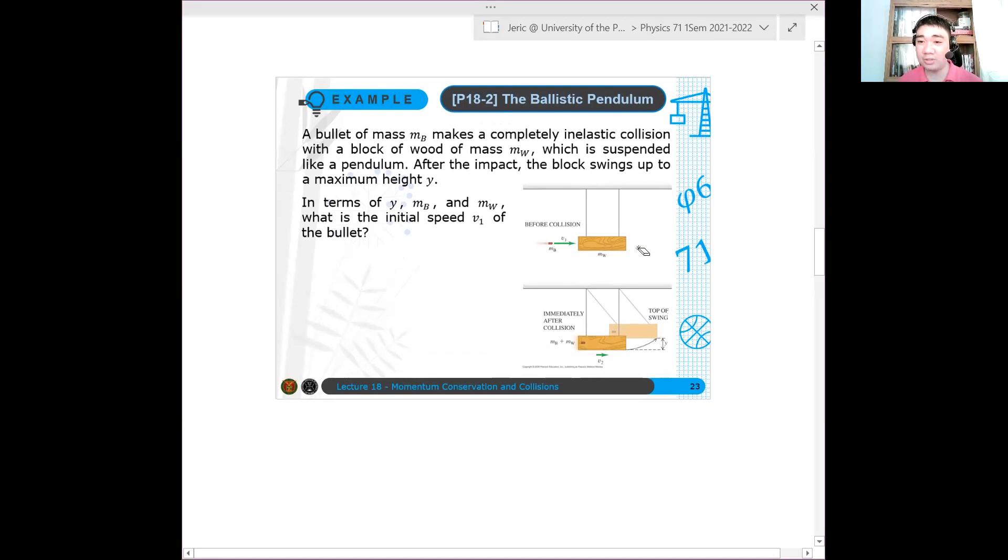So there are three situations that are happening. First, the bullet is moving with some velocity. So let's say that's the first state of the system. Our system is the bullet and the wood. So the bullet-wood system is here. The first state of the system is that the bullet moves in some velocity.